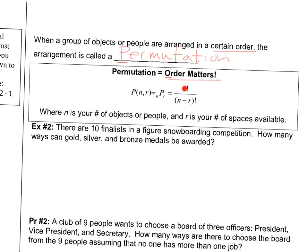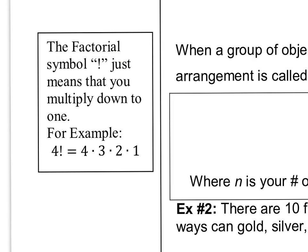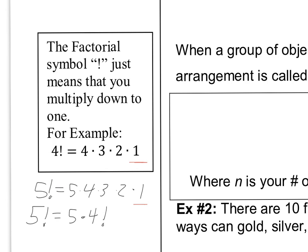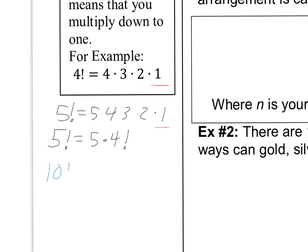The formula has an exclamation mark — that's the factorial symbol. All it means is that you multiply down to 1 from whatever that number is. So 4 factorial is 4 × 3 × 2 × 1, and 5 factorial is 5 × 4 × 3 × 2. You don't really need to multiply by 1. Notice that 5 factorial equals 5 times 4 factorial, and 10 factorial equals 10 times 9 factorial. You can keep expanding this pattern.